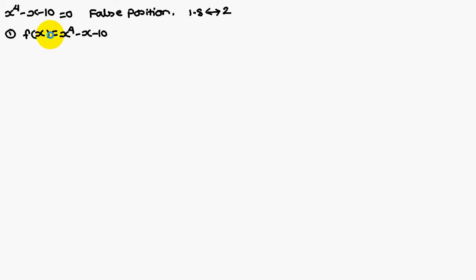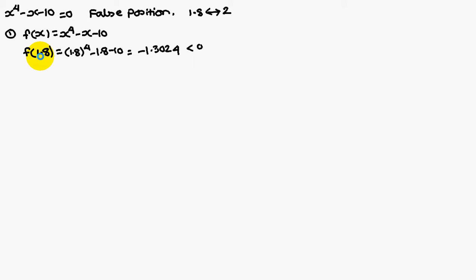The given function f(x) = x^4 - x - 10. To find f(1.8), replace x with 1.8 and simplify — you are going to get minus 1.3024. It is a negative value.